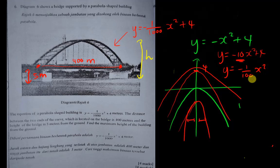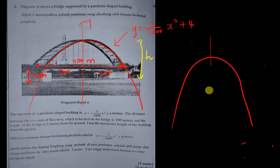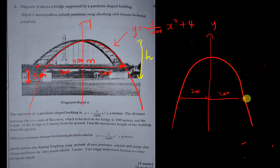This is basic knowledge but I think many SPM students haven't learned it. Now, in this format question, I know the y-axis is in the middle — it's not the bridge itself. Because the graph is symmetrical, if the total bridge length is 400 meters, then each side from the y-axis is 200 meters. So the curve is symmetrical and the distance from the y-axis to each end is 200 units. This means my x value at the bridge end is 200.